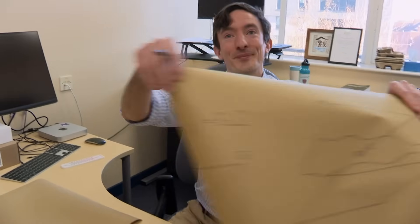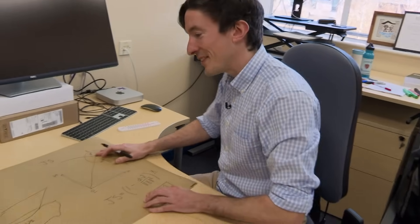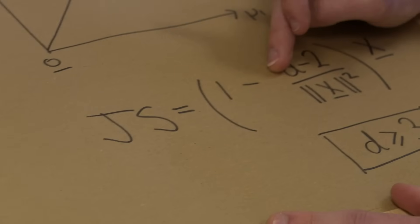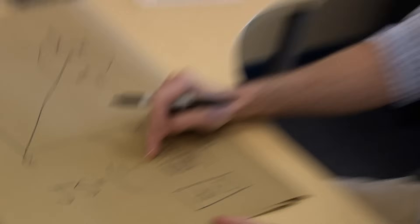We've learned that the James-Stein estimator is always better than just using the natural estimator in dimension three and above. Does it get more effective the higher the dimension? It does. But what's even more surprising is that even the James-Stein estimator is inadmissible — so there's something that's always better than this.